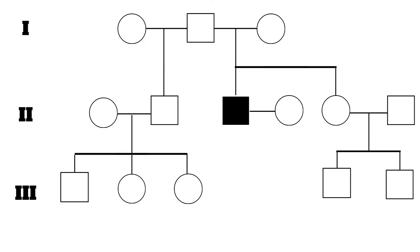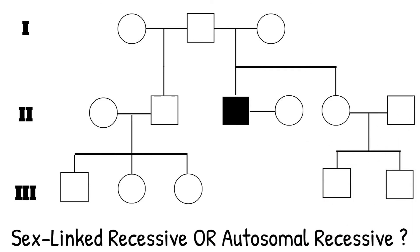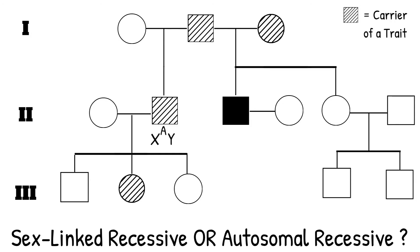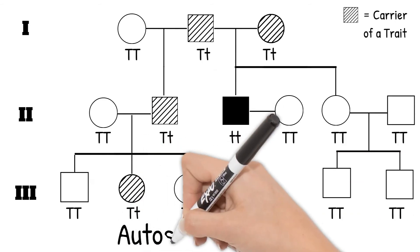Taking a look at this pedigree chart, there is not much to go on. We can tell it's not dominant, as the trait just popped up and the parents do not have it. But is it sex-linked or autosomal? Sometimes pedigrees will show carriers of a trait by using hash marks, which represent heterozygous genotypes for a recessive trait. These individuals do not have the trait, but they carry an allele that can pass on to their children or grandchildren. Looking at who is a carrier, you see males and females can both be carriers. Males cannot be carriers of sex-linked genes, as they cannot be heterozygous — they only have one of each sex chromosome. By looking at the carriers, we can tell this is an autosomal recessive trait.